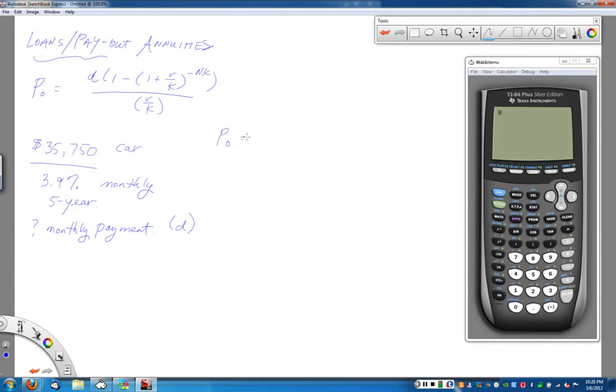P-naught or P-zero is the amount of the loan, which in this case is that $35,750. R is the 3.9%. Make sure you change it to a decimal so I get 0.039.